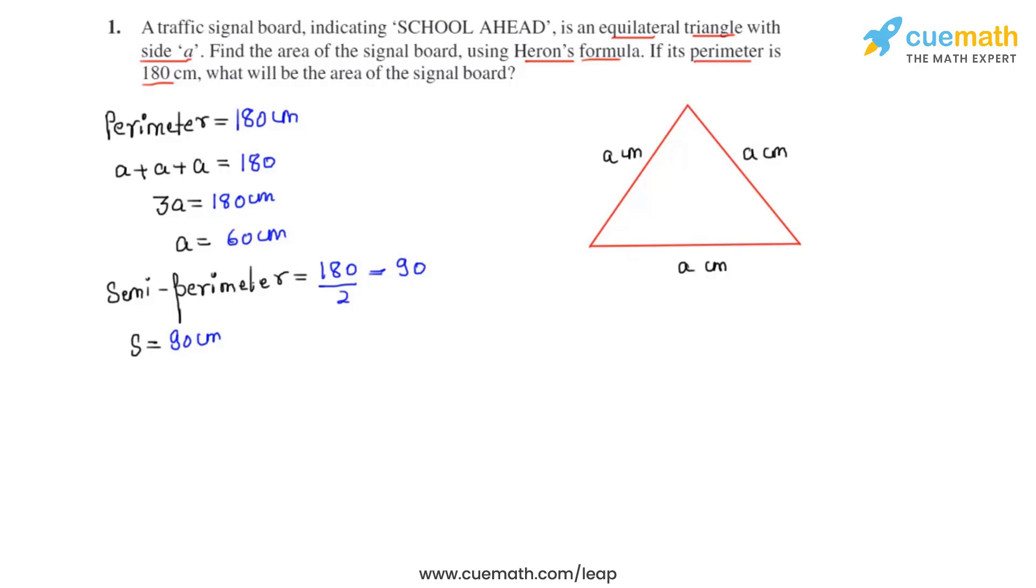So we can say that the semi-perimeter S equals 90 centimeters. Now let's write the Heron's formula by which we can calculate the area of this traffic signal board.